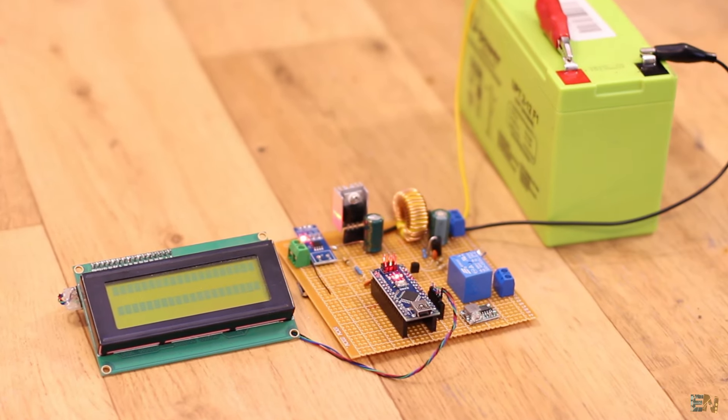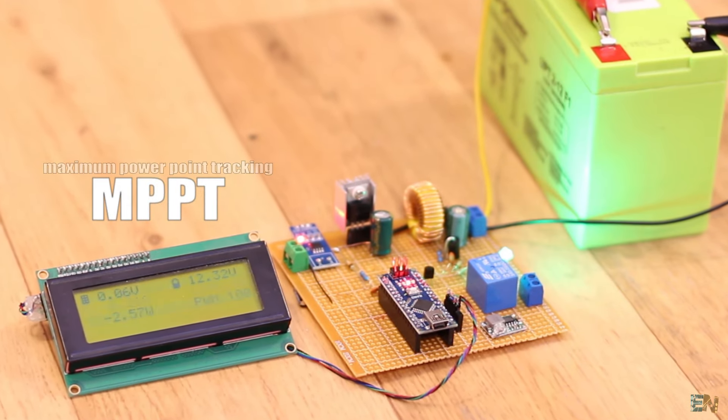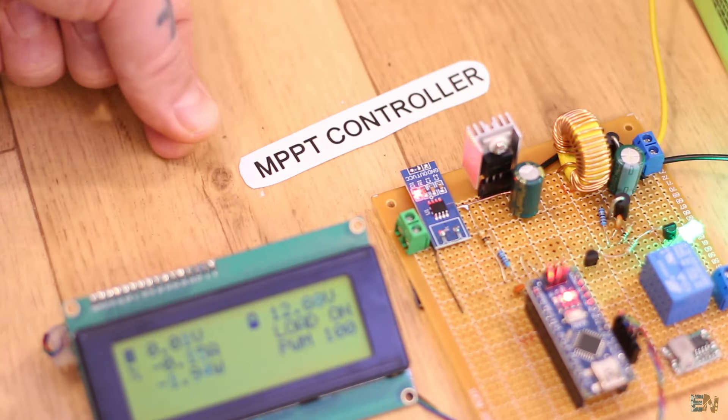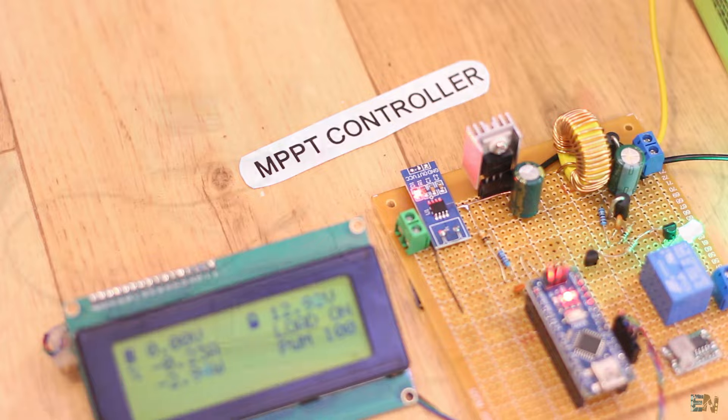This here is a prototype for an MPPT controller or maximum power point tracking, and is made with an Arduino. Before you start, have in mind that this is just a prototype and I'm still improving it.